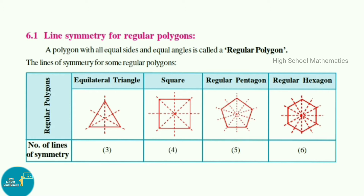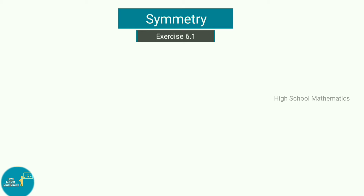For an equilateral triangle, the number of lines of symmetry is three. For a square, the number of lines of symmetry is four. For a regular pentagon, the number of lines of symmetry is five. And for a regular hexagon, the number of lines of symmetry is six.